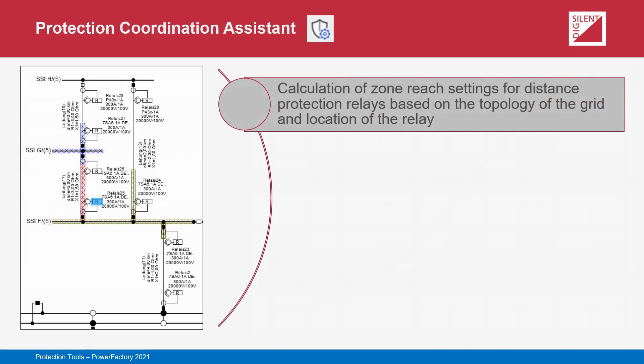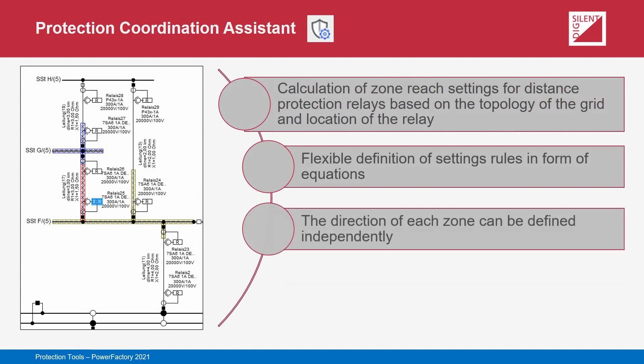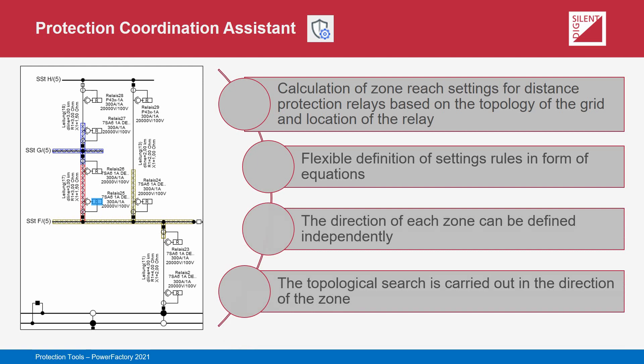The Protection Coordination Assistant is used to automatically calculate reach settings and time delays for the time-distance protection zones of distance relays. For each relay to be coordinated, PowerFactory starts at its installed location and uses a topological search to find the surrounding cables, lines, and other relays which are relevant for the reach and time coordination calculations. From the information gathered, the relevant impedance parameters are then extracted for consideration in the setting rules. The setting rules are a flexible, user-defined set of equations applied to the extracted impedance parameters in order to calculate the appropriate reaches.